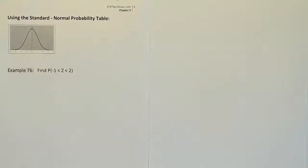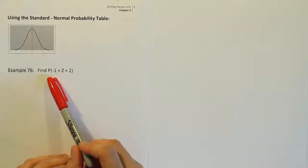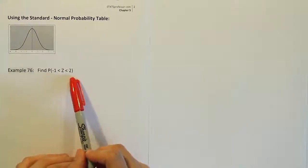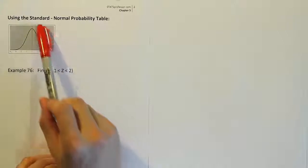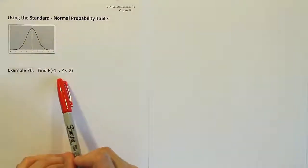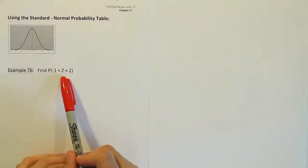Example 76. This one says, find the probability that z is between negative 1 and 2. Now this notation here implies that we're working with the standard normal probability curve, because z, from now on, will mean for us the standard normal random variable.